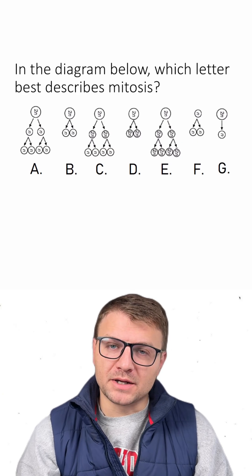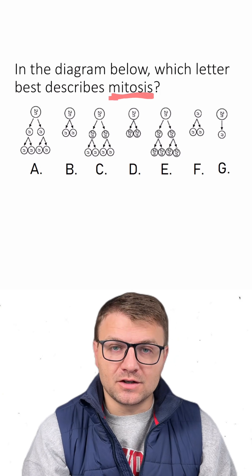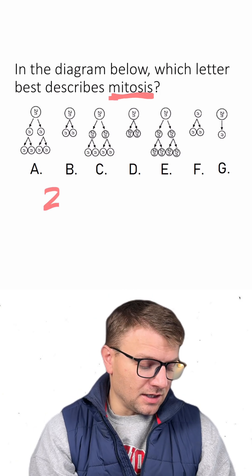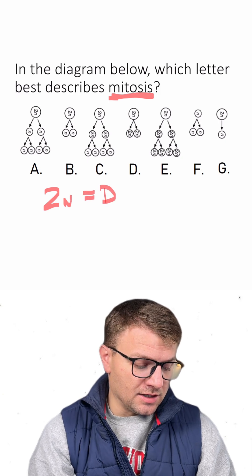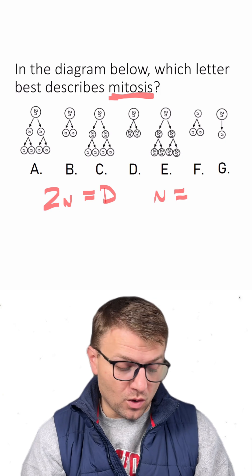In the diagram below, which letter best describes mitosis? Remember that mitosis is the cell division that creates body cells or diploid cells. We typically give the notation of 2n to diploid while haploid is just regular n or 1n.